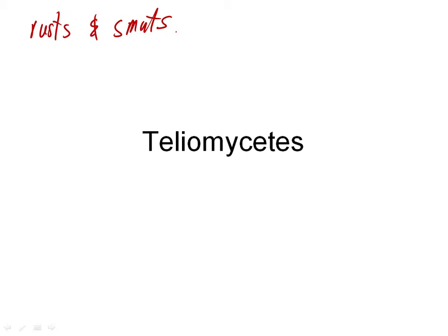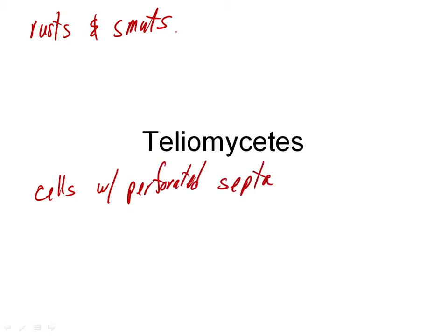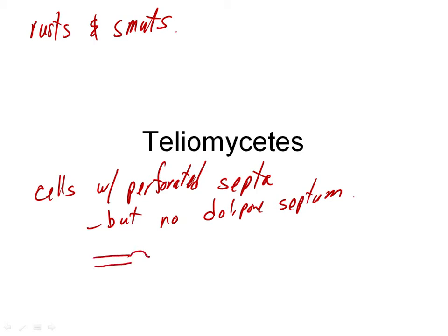The cells of the Telomycetes have perforated septa, but there is no dolipore septum. Remember, the dolipore septum has that thickening — the cell walls have that little thickening at the end — and there's that cap, the parenthesome around them. So there is no dolipore septum in these.